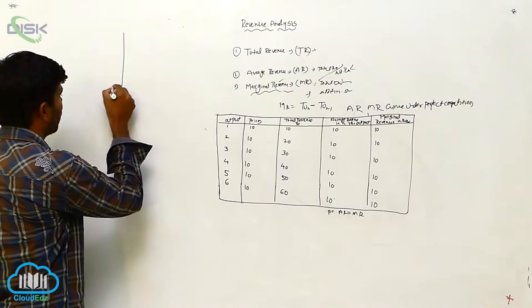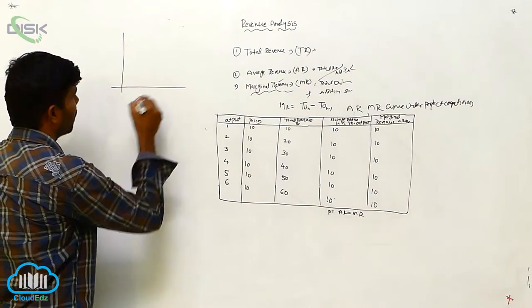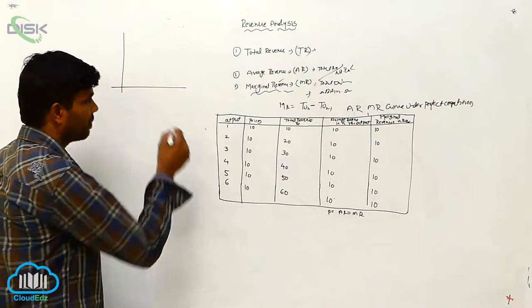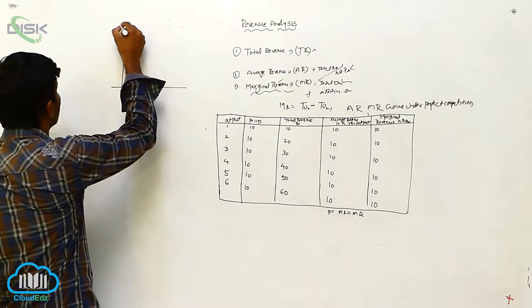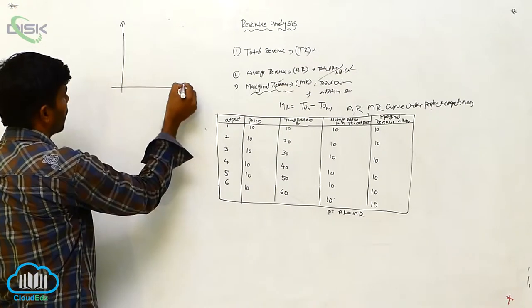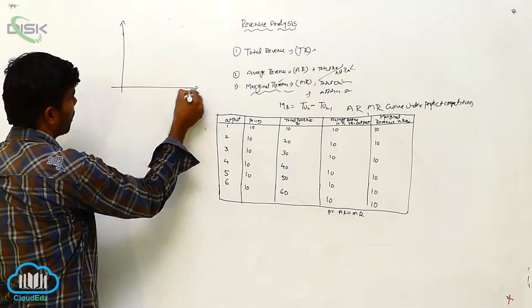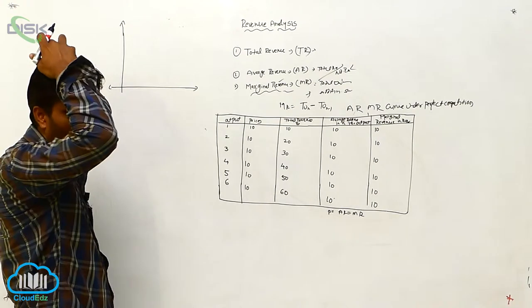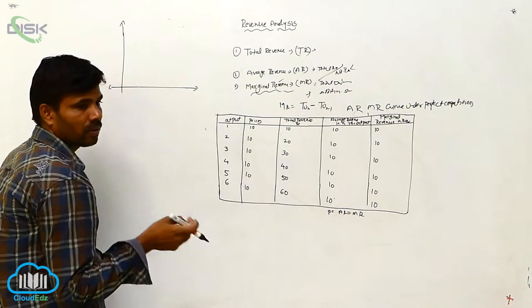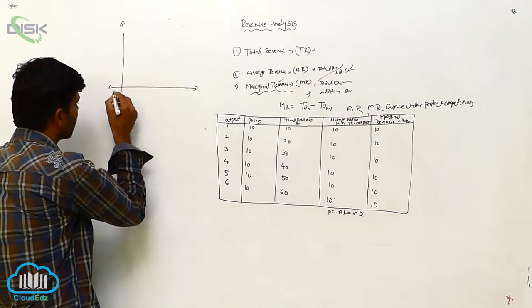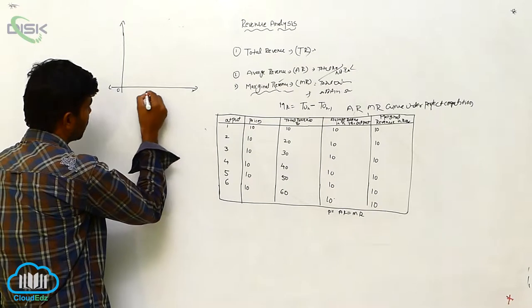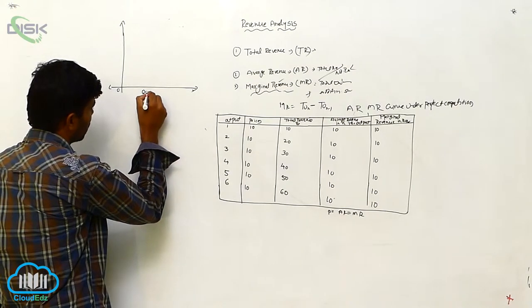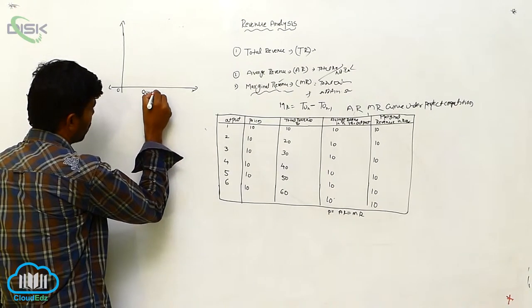This is the diagram. O, quantity, X, X, quantity — here we are setting up the axes for the diagram.